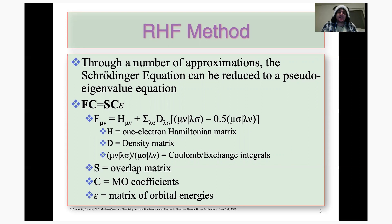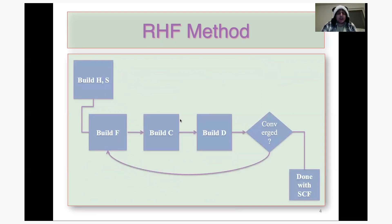Because the Fock matrix depends on the density matrix, which depends on C, which depends on the Fock matrix itself, we have to use an iterative process to calculate the Fock matrix. We start by building the Hamiltonian and the overlap matrix, then build our initial guess F, diagonalize F to get our MO coefficients, use that to build our initial density matrix, and then check for convergence. Convergence is typically defined as the root mean square of your density between two iterations being less than a given threshold. If not converged, you build a new Fock matrix, diagonalize that to get new MO coefficients, create a new density matrix, and repeat until convergence — at which point you're done with your SCF calculation.